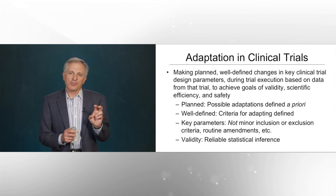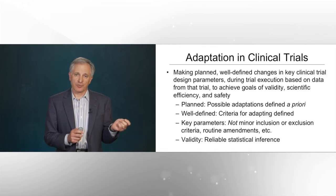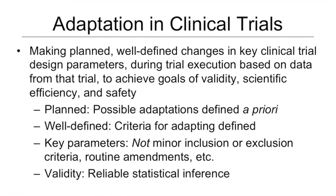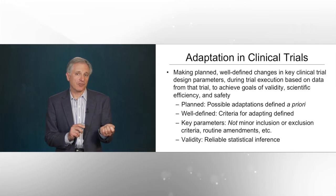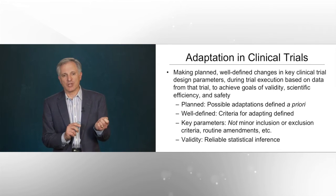In the context of overseeing an adaptive clinical trial, we need to understand what is different about an adaptive clinical trial from a traditional trial. We're going to use the term adaptation to mean making planned, well-defined changes in key clinical trial design parameters during trial execution based on data accruing within the trial itself to achieve goals of validity, scientific efficiency, and safety. By planned, we mean that the adaptations are defined a priori. By well-defined, we mean that the criteria for making those adaptations are known ahead of time. And by key parameters, we mean that we are changing important things about the trial, such as the number of treatment arms, the doses of medications that are used, or the number of patients that are enrolled between interim analyses.